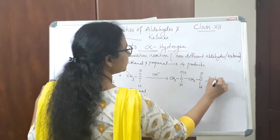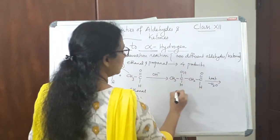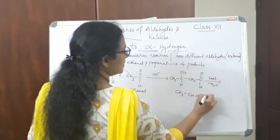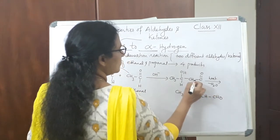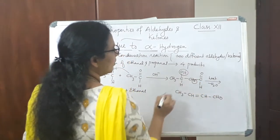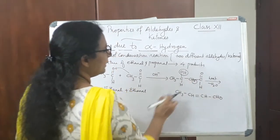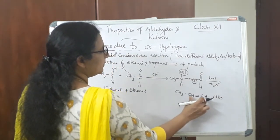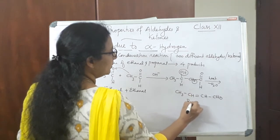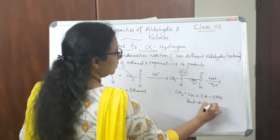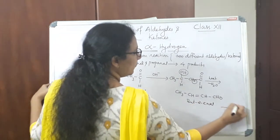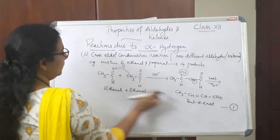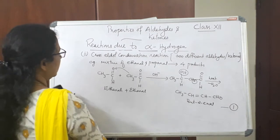On heating, this cross aldol product loses one molecule of water. The condensation product is CH₃–CH=CH–CHO, which is but-2-enal. This will be the first product out of the four products — formed from two ethanal molecules.